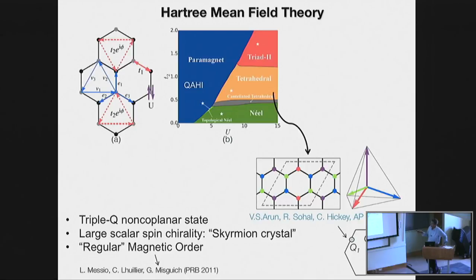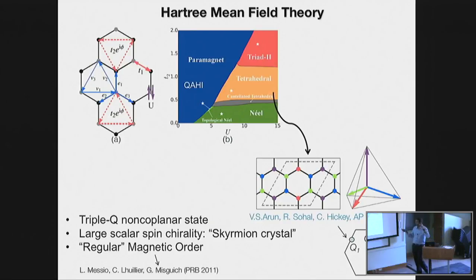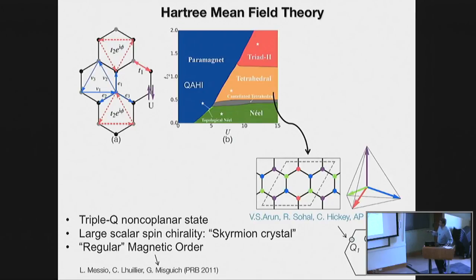If the second-neighbor hopping is large — larger than about one-half of the nearest-neighbor — we find other interesting non-coplanar states that emerge. In particular, there's a very wide window that persists out to fairly large interactions where one finds what we call a tetrahedral order, where spins organize themselves on the honeycomb lattice pointing towards one of four possible directions — the four corners of a tetrahedron. This relative orientation is fixed such that when you go around one of these hexagons, you cycle through A, B, C on the faces of this tetrahedron.